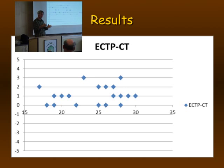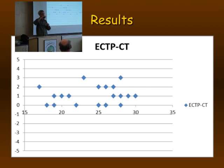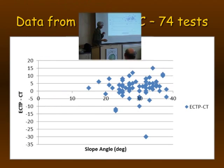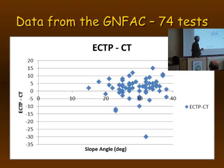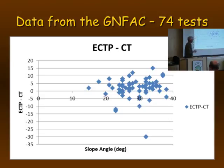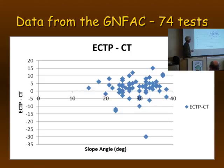We're looking at just one data set, one snowpack. So we thought we'd mine the whole snow pilot data set for ECTPs failing on a problematic weak layer and compare to CTs across all slope angles. Doug went into the Gallatin data from the last two years — looking at the difference between ECTP and CT tests across slope angles from around 15 up to around 40. There's no real clear trend; you get a very weak positive trend, but lots of scatter. What this suggests — not proves — is that if the ECT is independent of slope angle, then so is the CT.